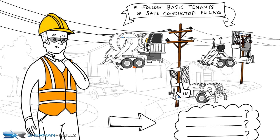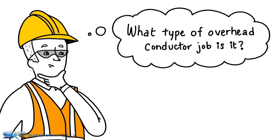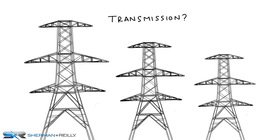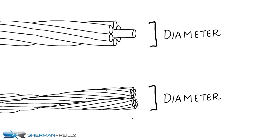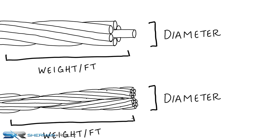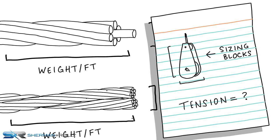You need to answer several questions. First, what type of overhead conductor job is it? Transmission or distribution? Second, what type and size of conductor is being installed? The diameter of the conductor and the weight per foot of the conductor are factors that need to be considered when sizing blocks and calculating tension requirements.